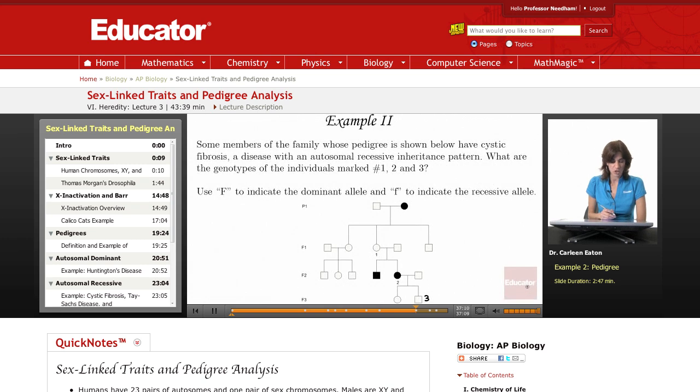Some members of the family whose pedigree is shown below have cystic fibrosis, a disease with an autosomal recessive inheritance pattern. What is the genotype of the individuals marked number one, two, and three? Use big F to indicate the dominant allele and little f to indicate the recessive allele.